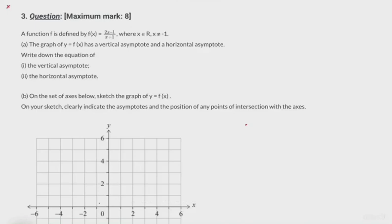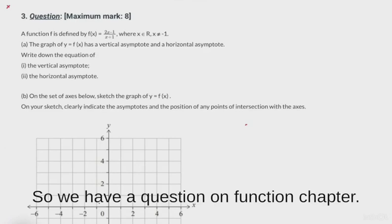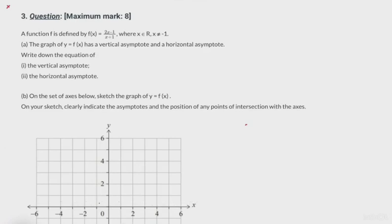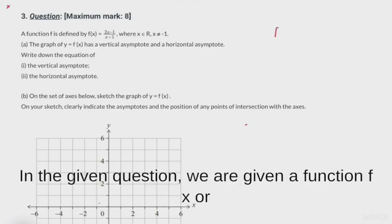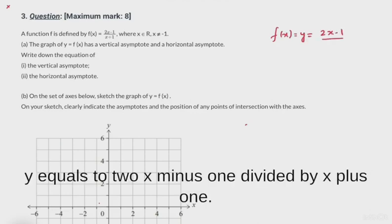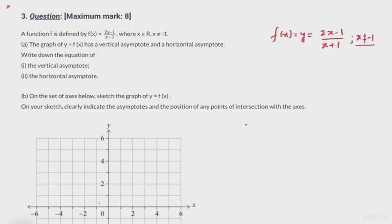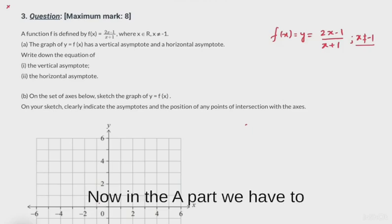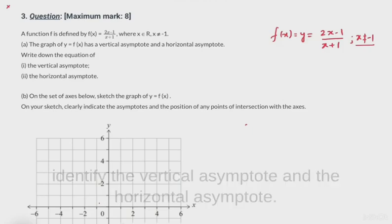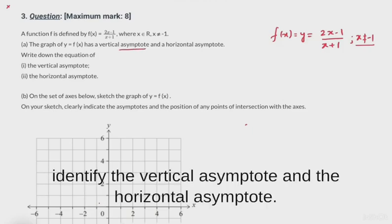Hello friends, we have a question on the function chapter. In the given question, we are given a function f(x) or y equals to (2x - 1) divided by (x + 1), and we know x cannot be minus 1. In part (a), we have to identify the vertical asymptote and the horizontal asymptote.